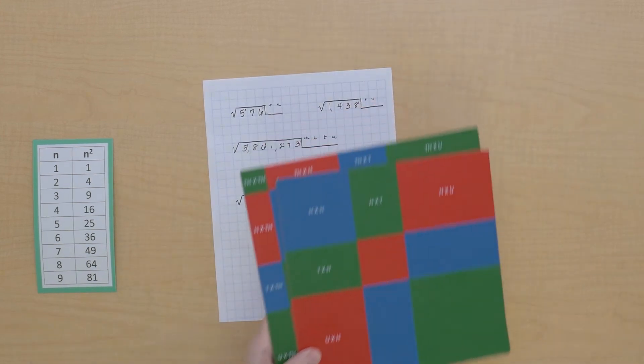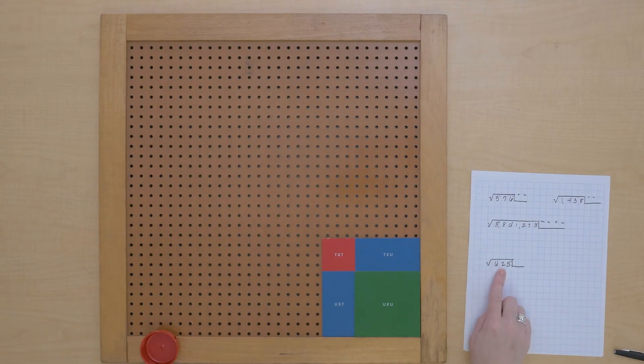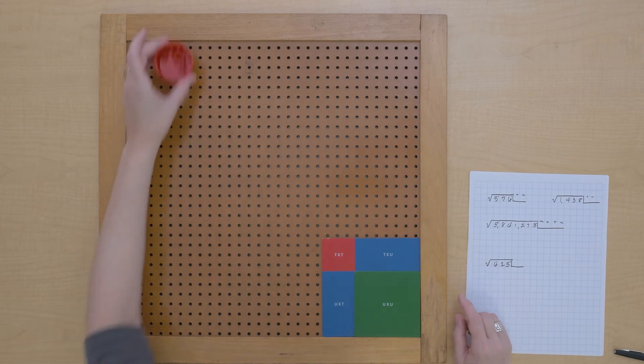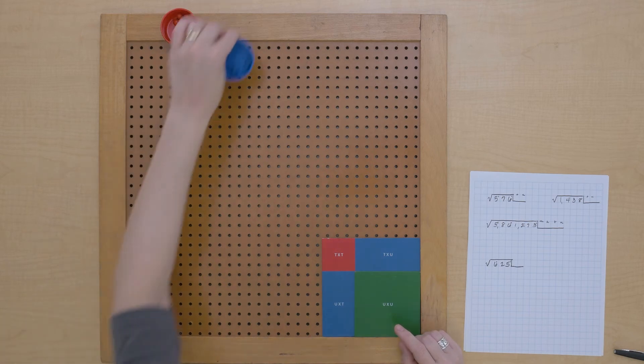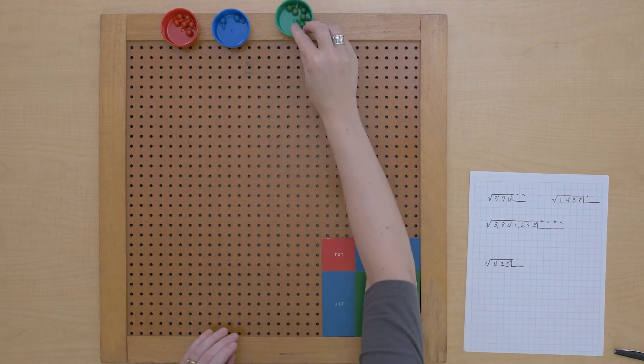So we know it's going to be a two digit root. So I can put these away. We're going to use the peg board for square root today. So to start, I'm going to make my number, my 625. So there I have six hundreds, twenty-five.